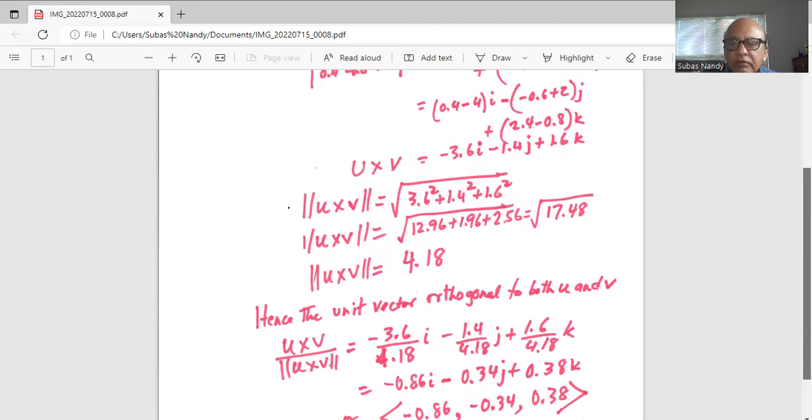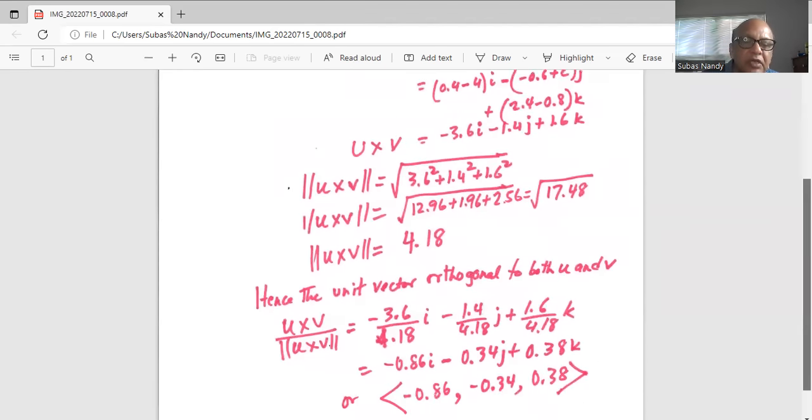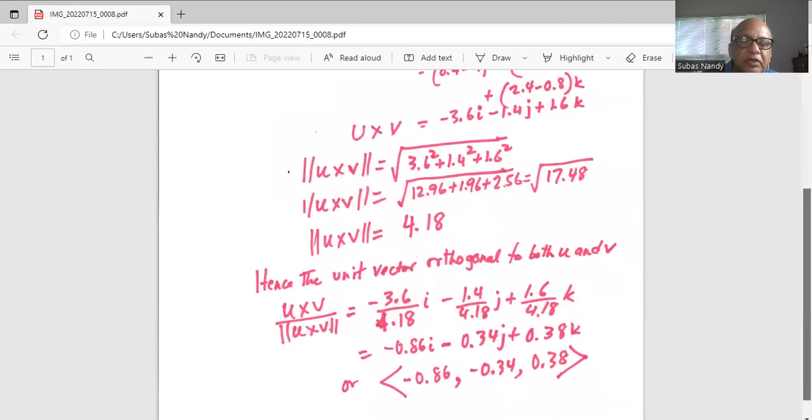Plus 1.6 divided by 4.18 coefficient of k which is minus 0.86i minus 0.34j plus 0.38k.